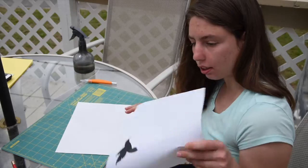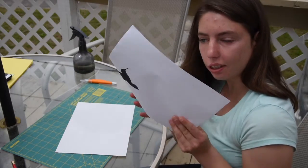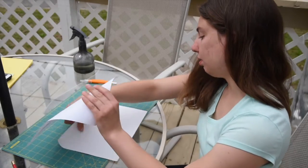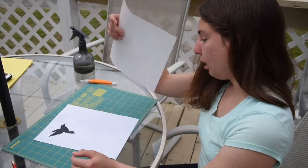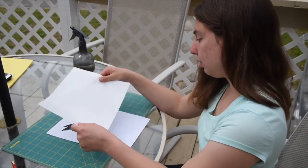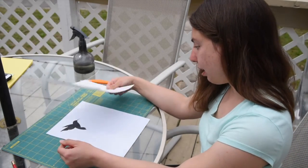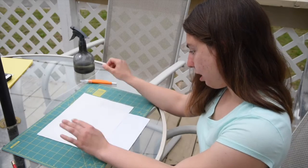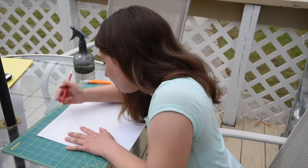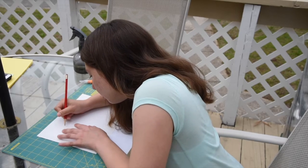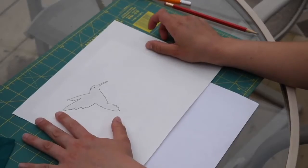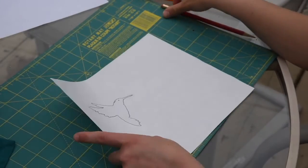I am going to cut out this picture of a hummingbird on this freezer paper. And then you put the freezer paper down, glossy side down, and trace it. And then I cut it out.